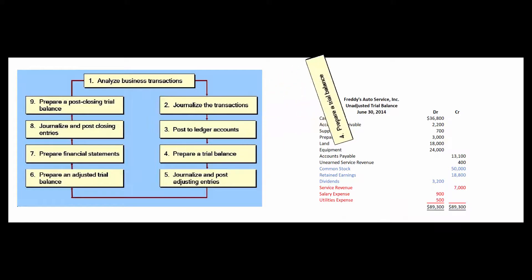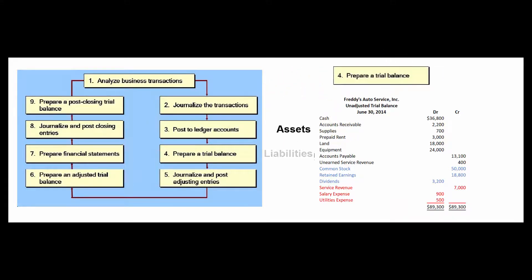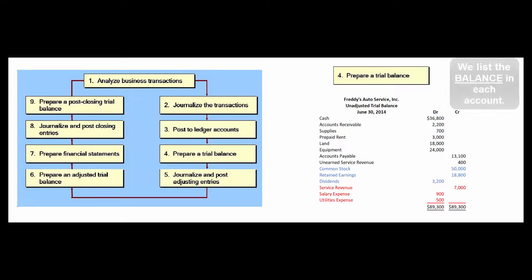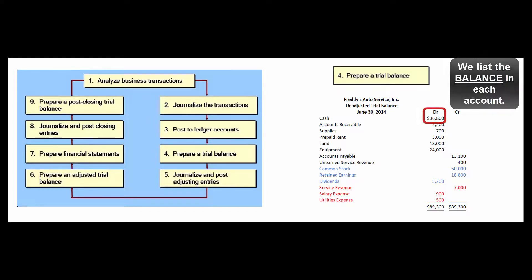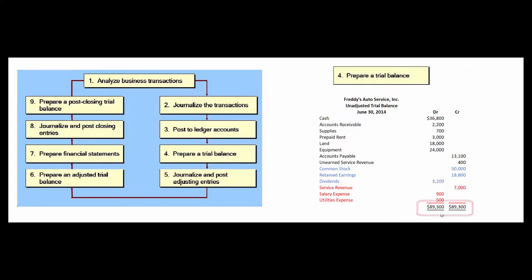Step four is to prepare a trial balance. We list all our accounts in the special order — assets, liabilities, owner's equity, revenue, and expenses — and we list the balance in each account. Notice there's not a separate debit and credit next to cash; the balance in the cash account, when we offset all the debits against all the credits, is thirty-six thousand eight hundred. Hopefully all our debits equal all our credits. If they don't, we know we've done something wrong and we have to go back and double-check.